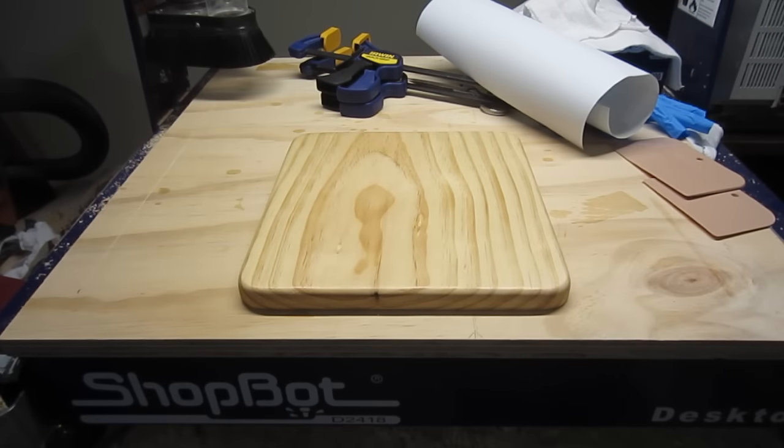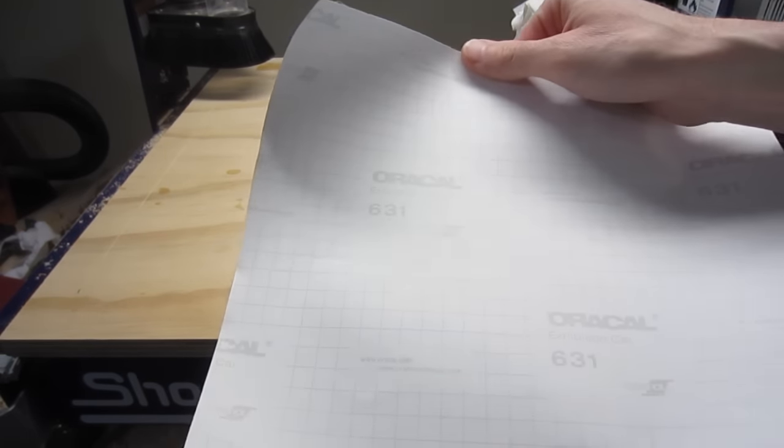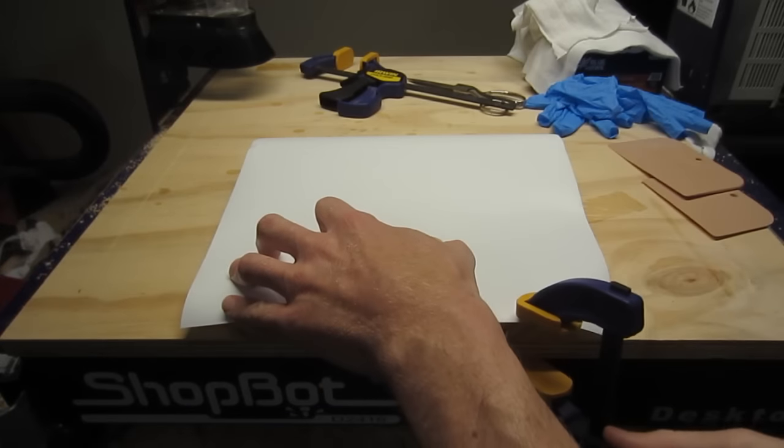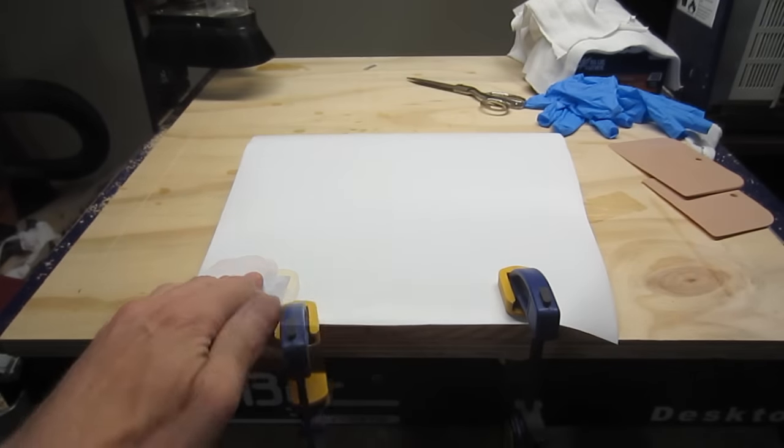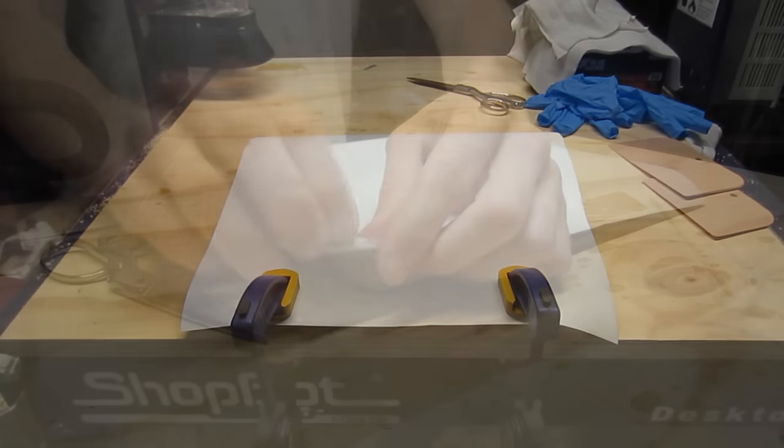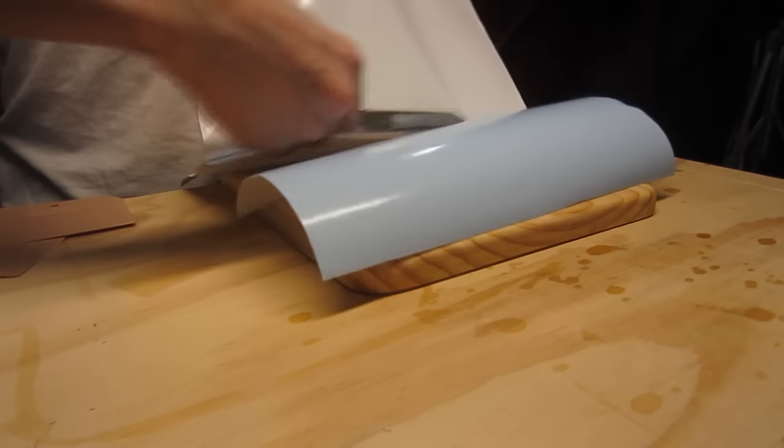Now, it's time to apply the vinyl paint mask. I've been using Oracal 631 for this purpose. To control the material during this process, I use a couple of padded trigger clamps to secure the sign blank and vinyl sheet to a table, or in this case, a piece of plywood. I peel the vinyl back about halfway and cut the backing with scissors.